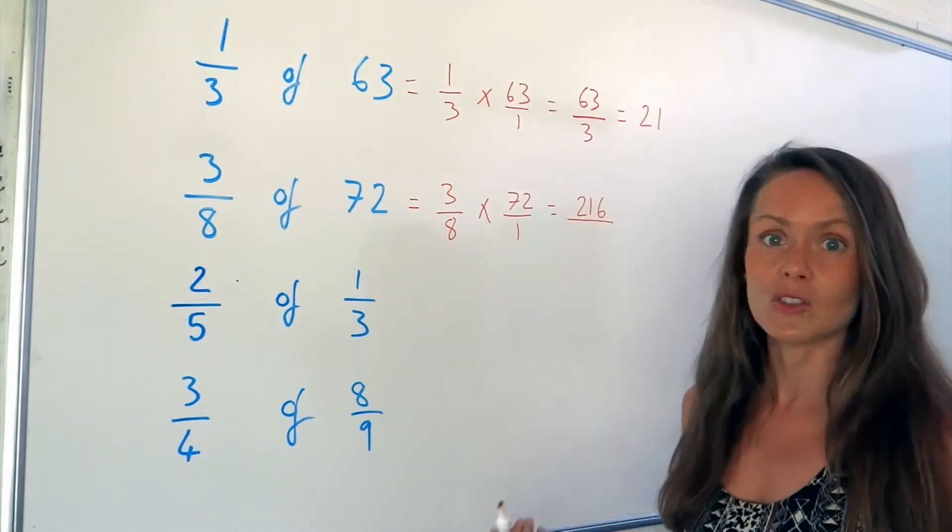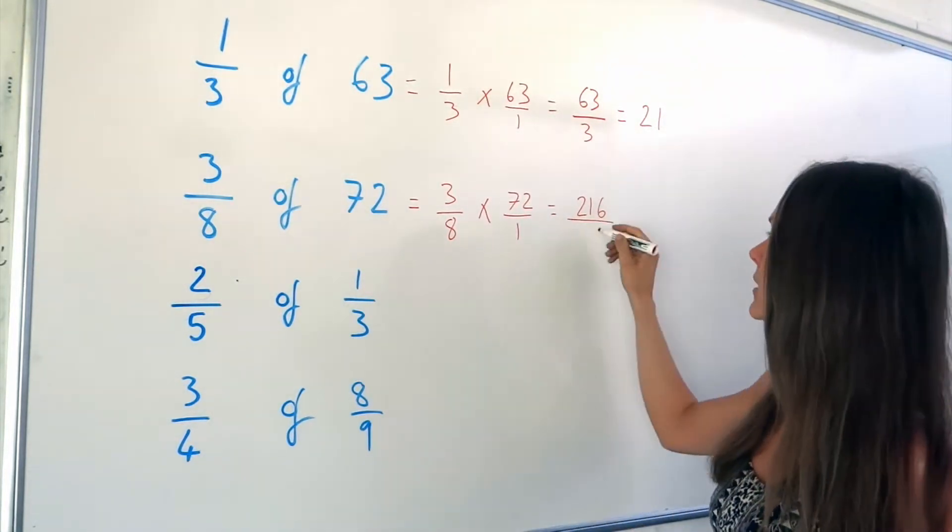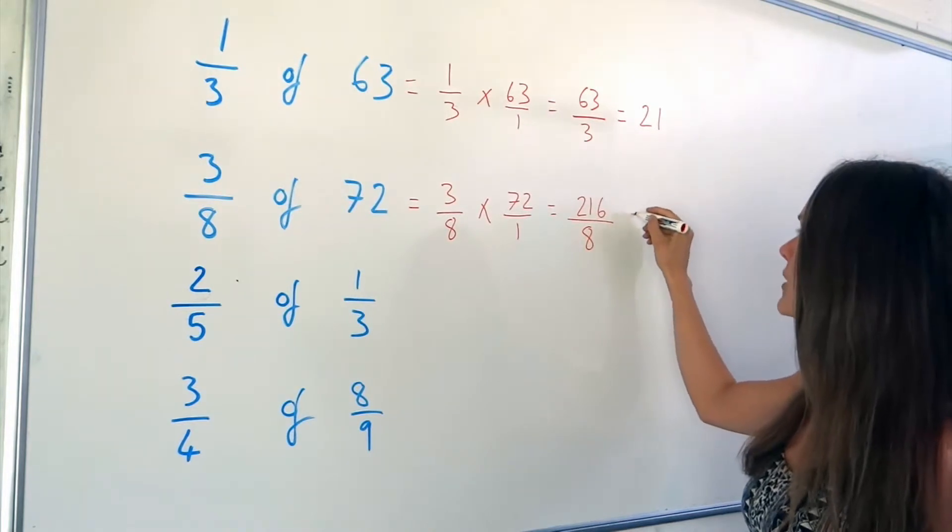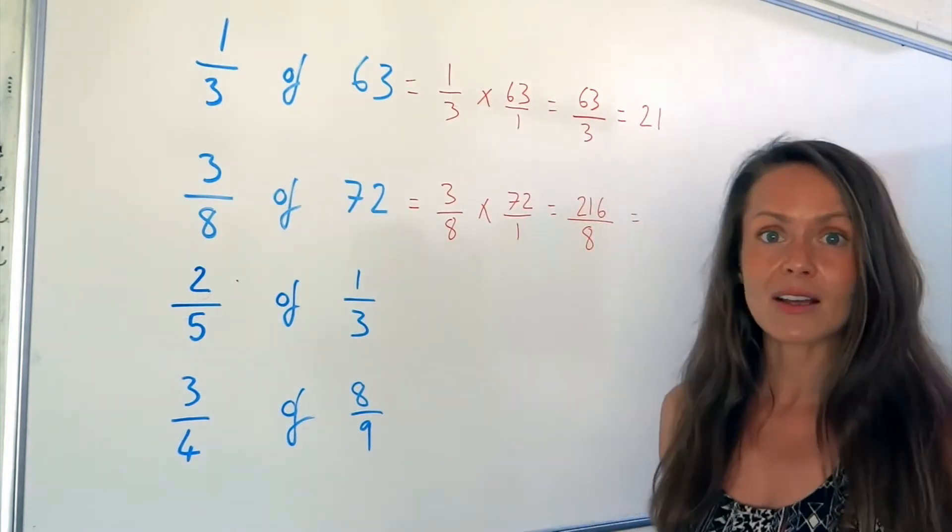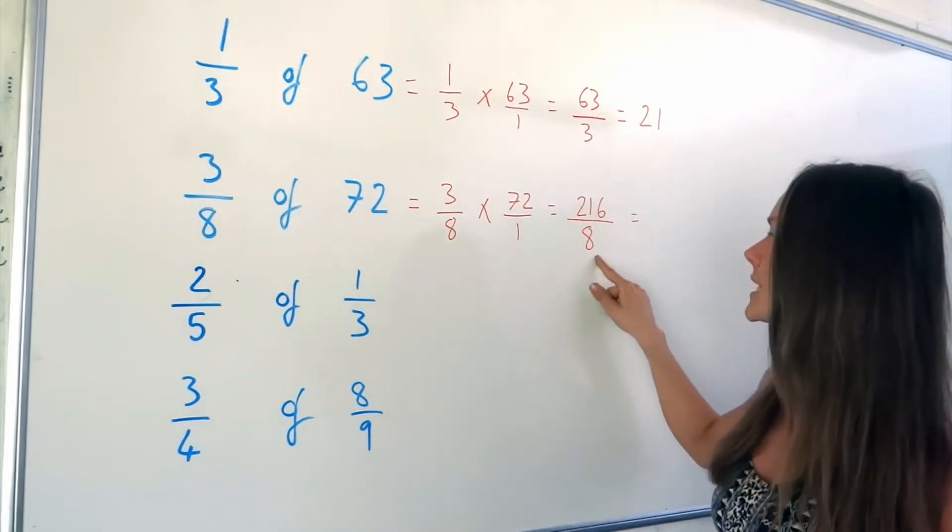And now if I multiply the denominators together, 8 times 1 is 8. So this fraction simplifies as well. Don't just leave it like that.